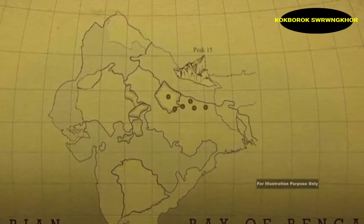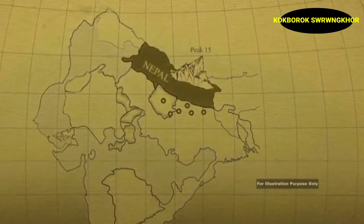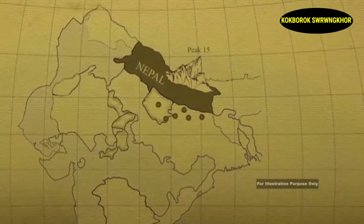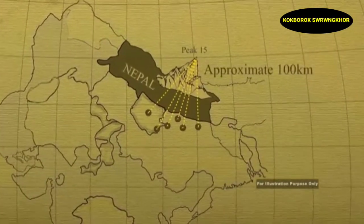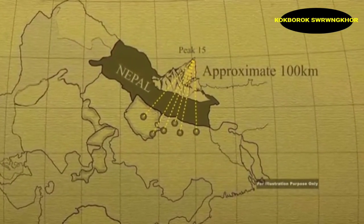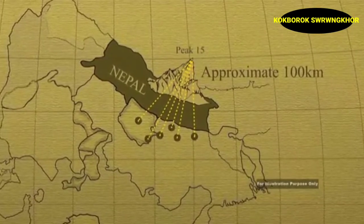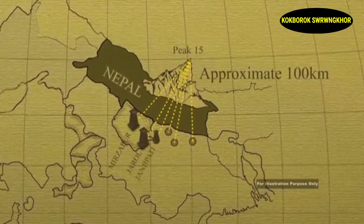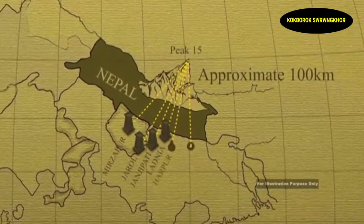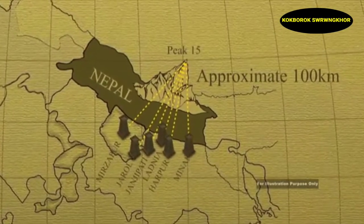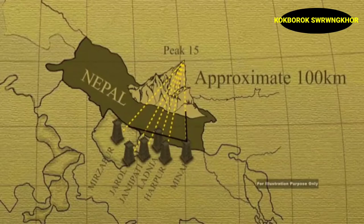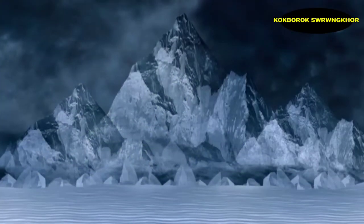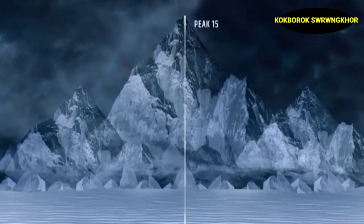The survey work was carried out from Nepal's border area, from locations approximately 100 km away. Average measurements were taken from stations at Mirjapur, Jarol, Janjipati, Ladaniya, Harpur, and Minai. From these stations, Peak XV observations used triangulation — a triangle shape method — to determine the measurements at sea level.